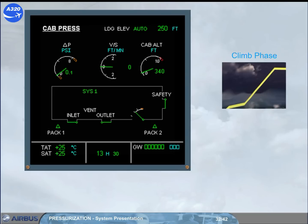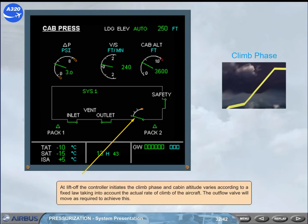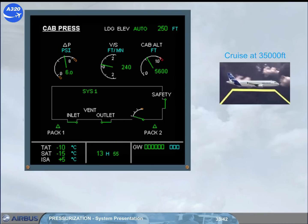At lift-off, the controller initiates the climb phase, and cabin altitude varies according to a fixed law, taking into account the actual rate of climb of the aircraft. The outflow valve will move as required to achieve this. Once established in cruise, the cabin altitude and differential pressure will remain steady. The outflow valve will move as required to maintain the cabin altitude. In the example shown, the aircraft is in cruise at 35,000 feet. Notice the values of differential pressure and cabin altitude.